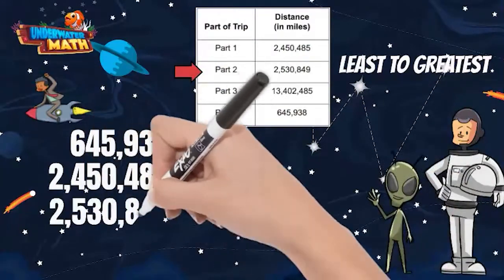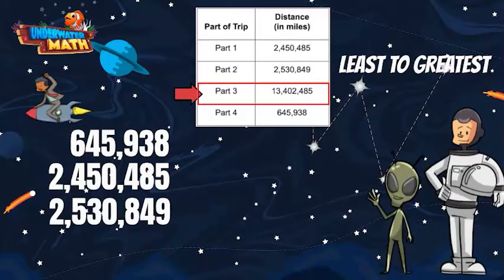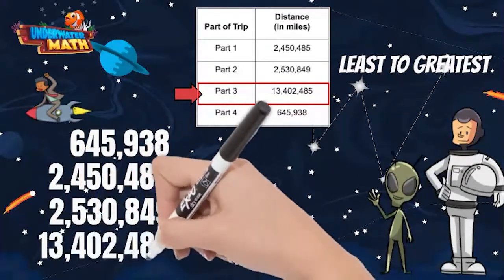This leaves part 3 as the largest number. This makes sense because it is the number with the highest place value. Our list is now in order from least to greatest.